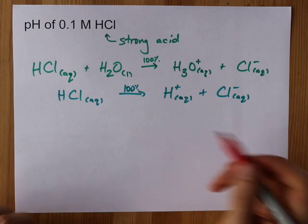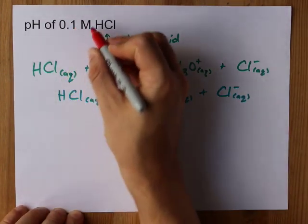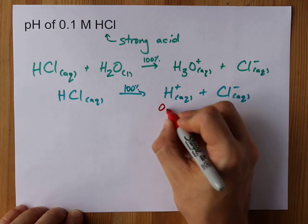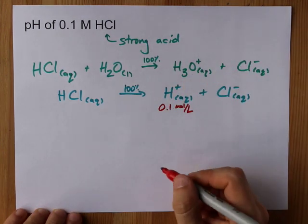What's the pH though? Well, because it is a 100% yield, 0.1 mol per liter of HCl is going to give you 0.1 mol per liter of these things.